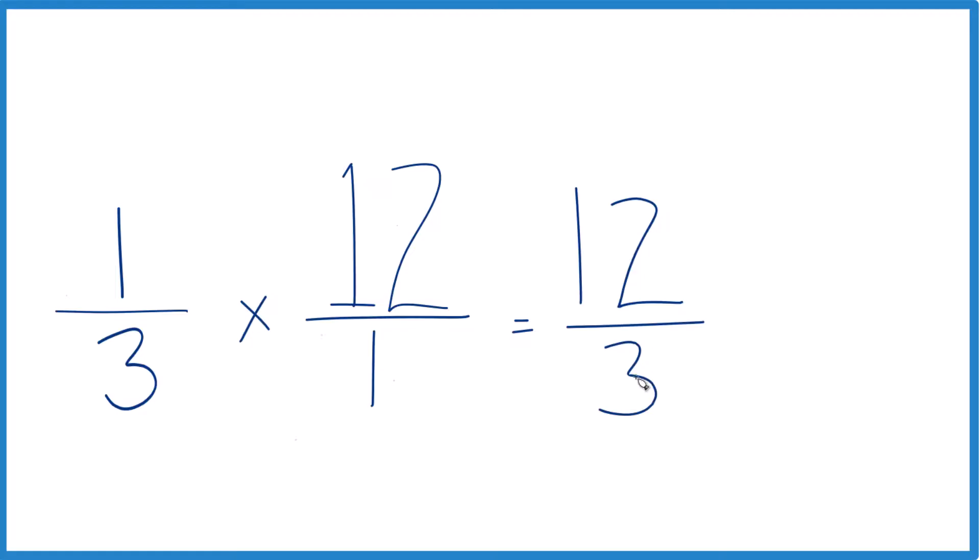So we end up with 12 thirds. One-third times 12 gives you 12 thirds. And you could take this and make it even simpler, because 3 goes into 12. So 12 divided by 3 is 4. The final answer is 4.